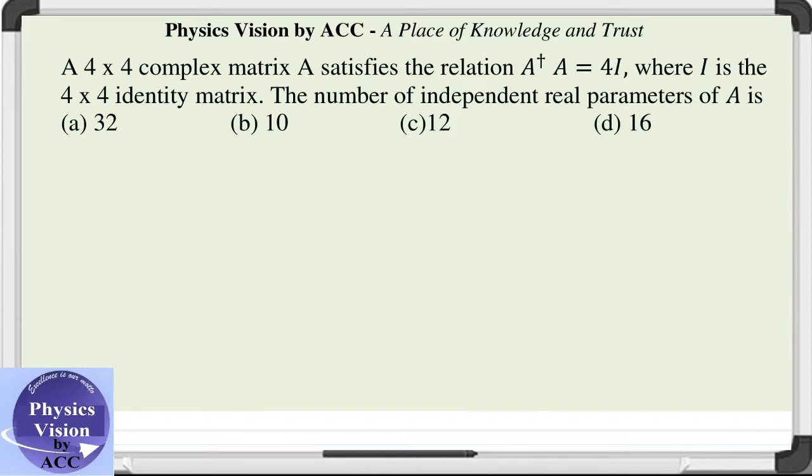Welcome back dear students to the physics vision classes. The given question is: we have a 4 by 4 complex matrix A which satisfies this condition, and we need to calculate the number of independent real parameters of this matrix.